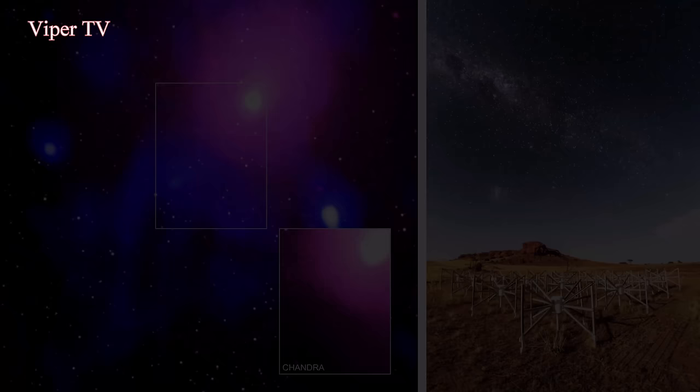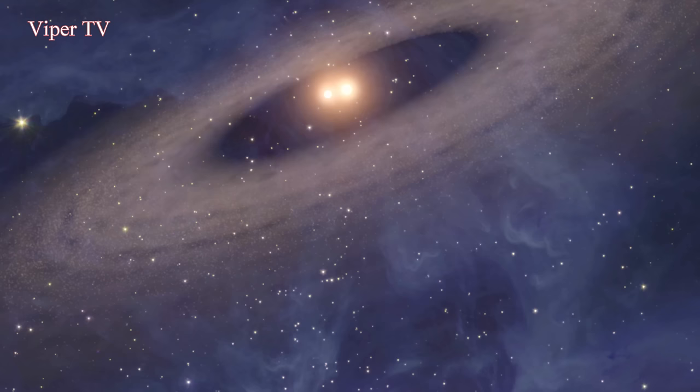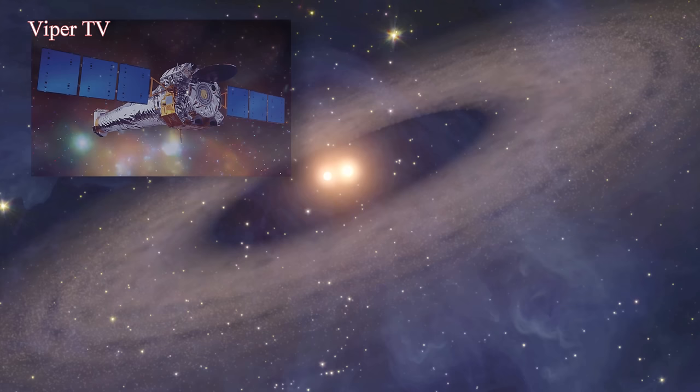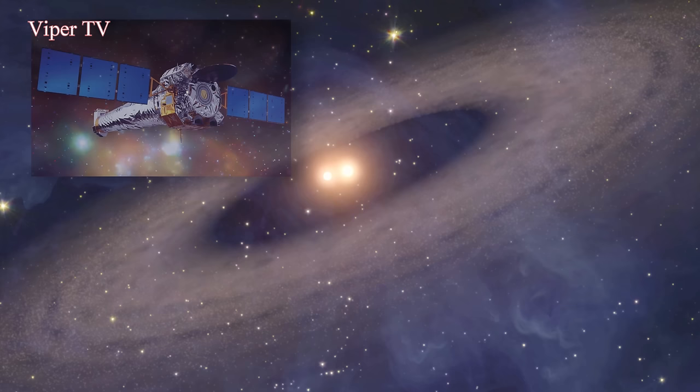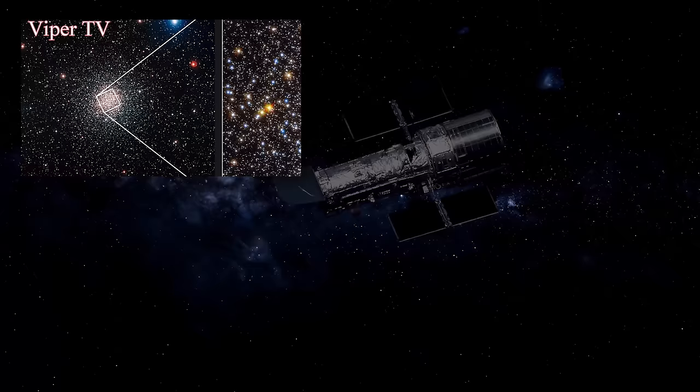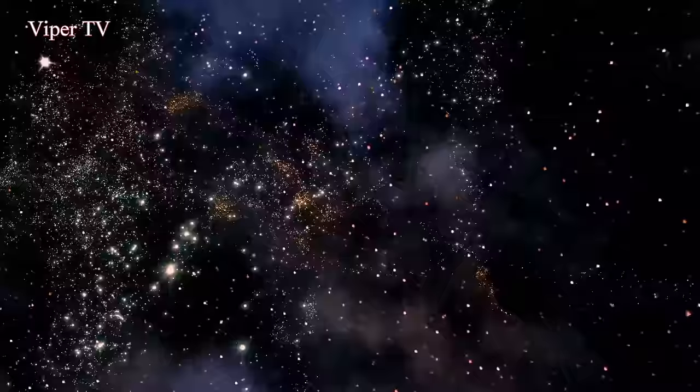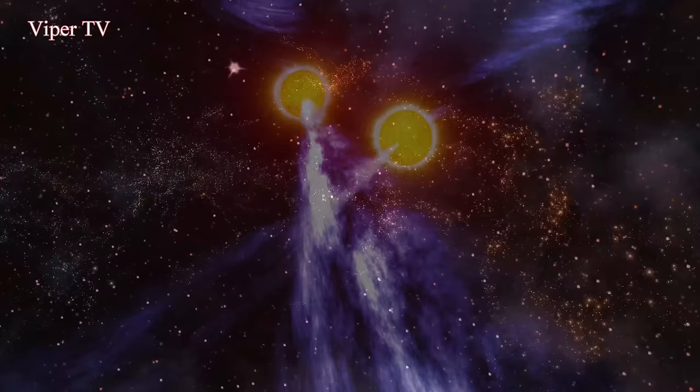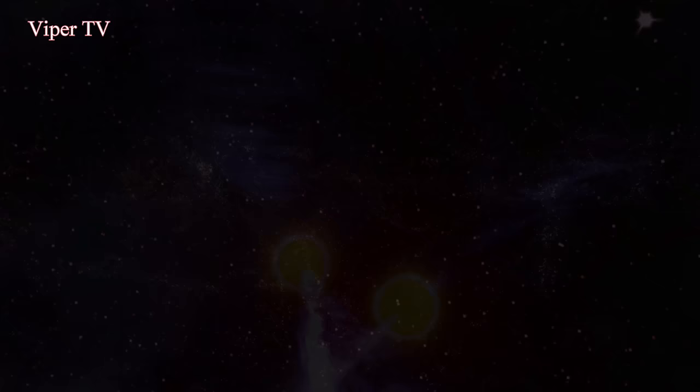While much has been learned about the galaxy cluster Ophiuchus through X-ray and radio telescopes, more data will be needed to answer the many remaining questions this object poses. Number 14, Cosmic Jekyll and Hyde. A double star system has been flipping between two alter egos, according to observations with NASA's Chandra X-ray Observatory and the NSF's Karl F. Jansky Very Large Array. This is a rare example of a cosmic object changing its behavior in this way. Astronomers found this unusual object in a dense collection of stars, the globular cluster Terzan 5, which is located in the Milky Way galaxy about 20,000 light years from Earth.